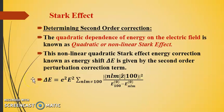This non-linear Stark effect energy correction, which is known as the energy shift, is given by second order perturbation correction term. That is delta E equals e squared E squared summation over nlm not equal to 100 and modulus square of these states, bra nlm z cap ket 100, divided by the energy difference of the two states E_100^(0) minus E_nlm^(0).